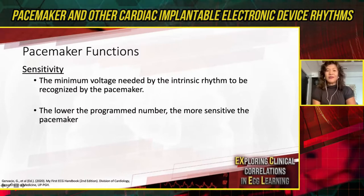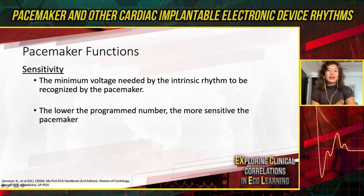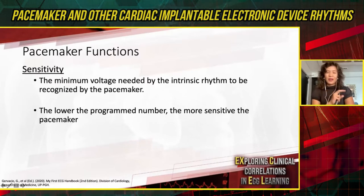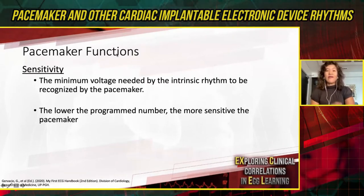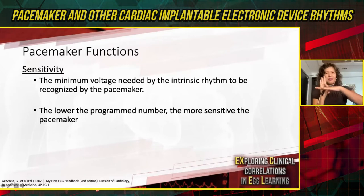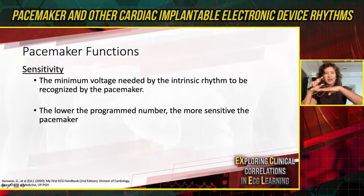Sensitivity is the parameter adjusted to allow adequate sensing. During implants, you will commonly hear requests for measurement of the P wave and R wave — these are the sizes of the intrinsic electrograms from the atrium and ventricle, respectively. When setting the sensitivity, we divide the P wave and R wave amplitude by two to allow an adequate safety margin. The sensitivity setting is like a fence — it sets what the pacemaker can see. If the R wave is five millivolts, you want the sensitivity setting to be half that to ensure the pacemaker still sees intrinsic activity.